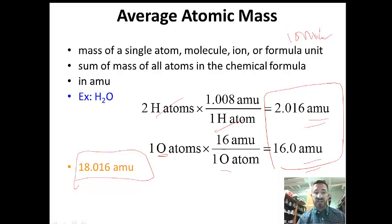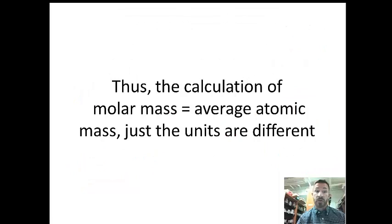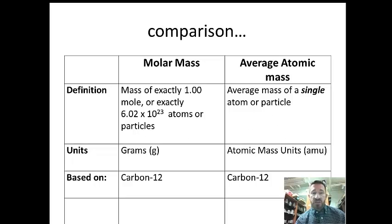If we did the molar mass, it would be 18.016 grams. Thus, the calculation of molar mass is equal to the average atomic mass, just the units are different. For comparison, molar mass is the mass of exactly one mole or 6.02 times 10 to the 23rd atoms or particles.